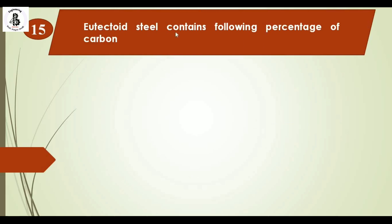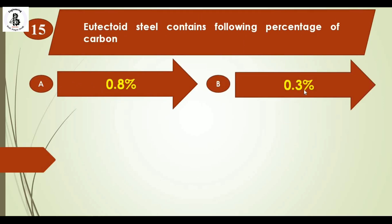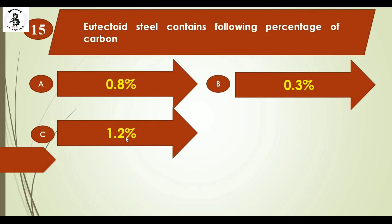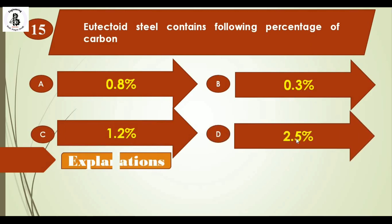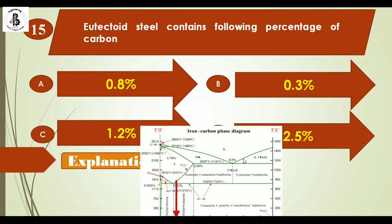Eutectoid steel contains the following percentage of carbon: option A 0.8%, option B 0.3%, option C 1.2%, and option D 2.5%. As per the iron-carbon diagram, the eutectoid point occurs at 0.8% carbon and around 723 degrees centigrade. Steel with 0.8% carbon is considered eutectoid steel. The right answer is option A, 0.8%.